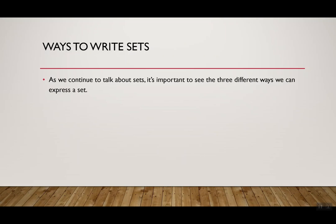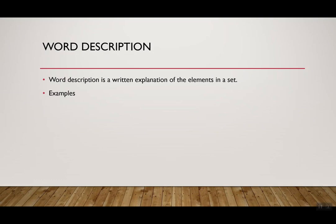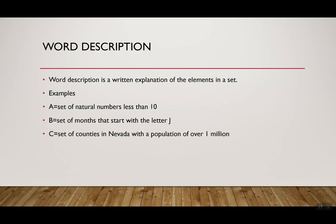So we want to talk about different ways to write sets. We have three types of ways we can express a set: word description, roster (which is also called listing method), and then set builder notation. So we're going to start with word description. Word description is a written explanation of the elements in a set. Look at an example. I could have A is a set of natural numbers less than 10. B is a set of months that start with the letter J. C is a set of counties in Nevada with a population over 1 million. So each of these times I didn't write any of the elements, I just told you what they would be.